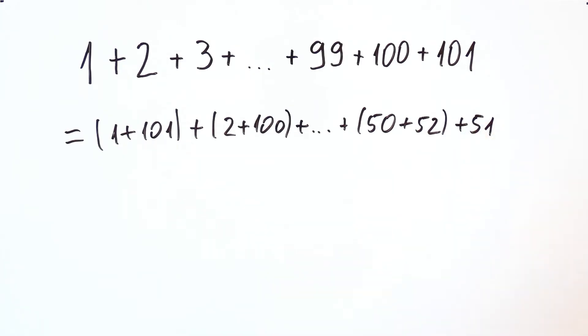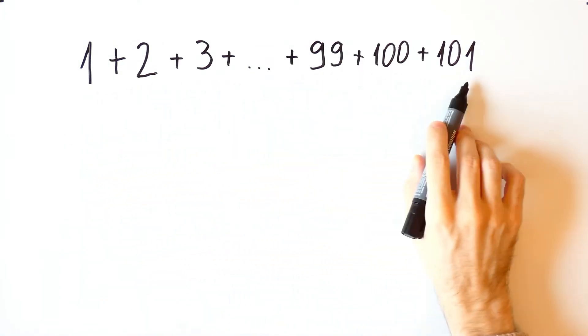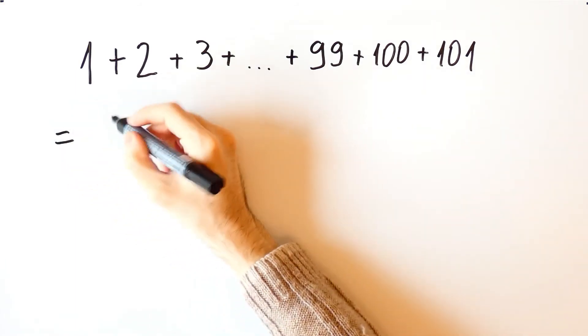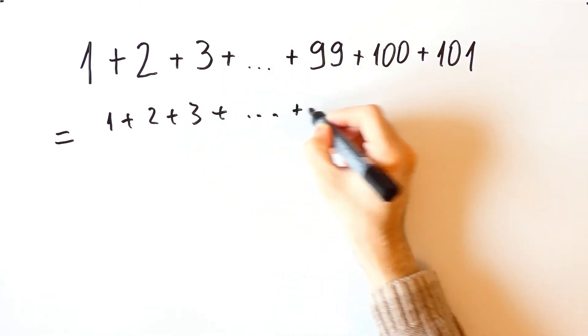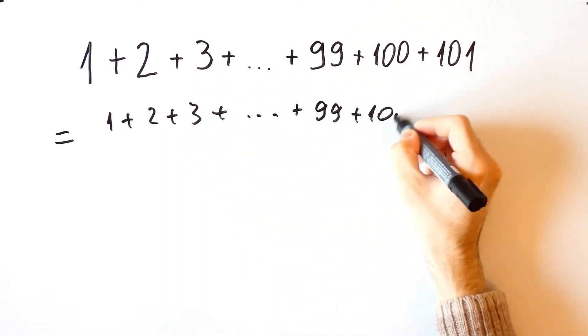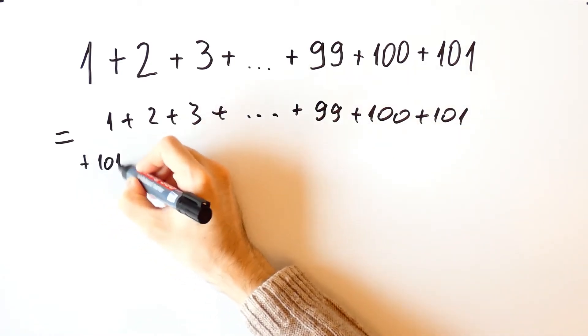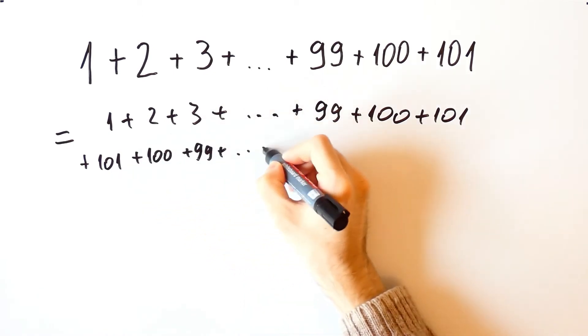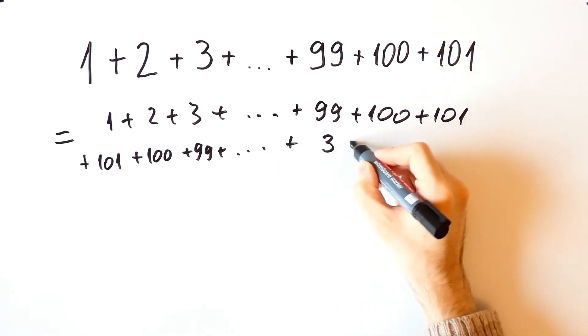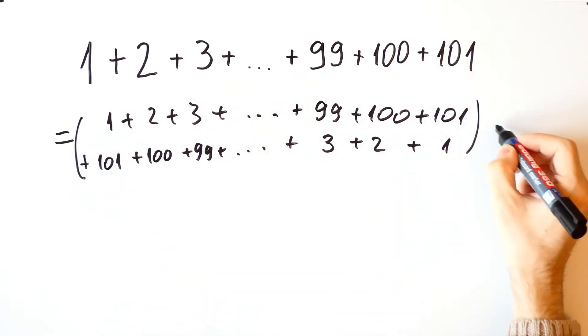However, if we modify this method slightly, we can avoid this. We'll add all these numbers twice and then divide the sum by 2. So this is equal to 1 plus 2 plus 3 plus 99 plus 100 plus 101, and now plus 101 plus 100 plus 99 plus and so on plus 3 plus 2 plus 1, and all of this divided by 2.